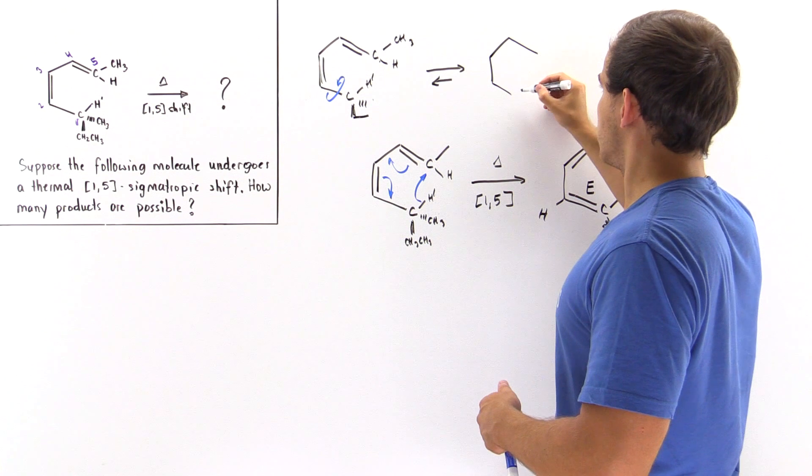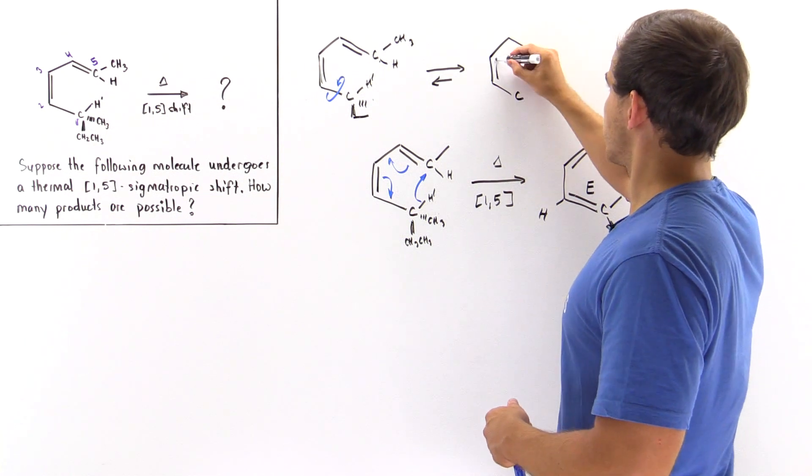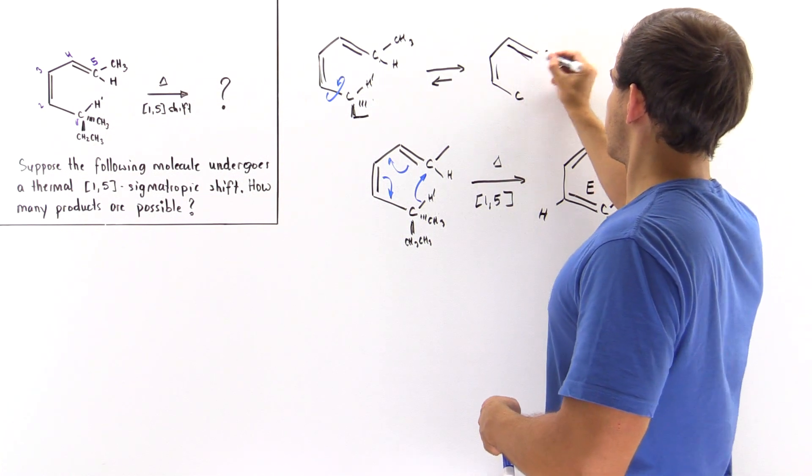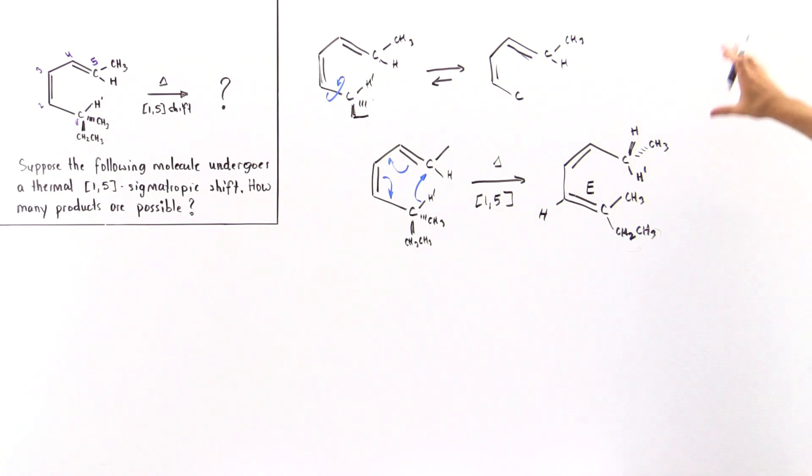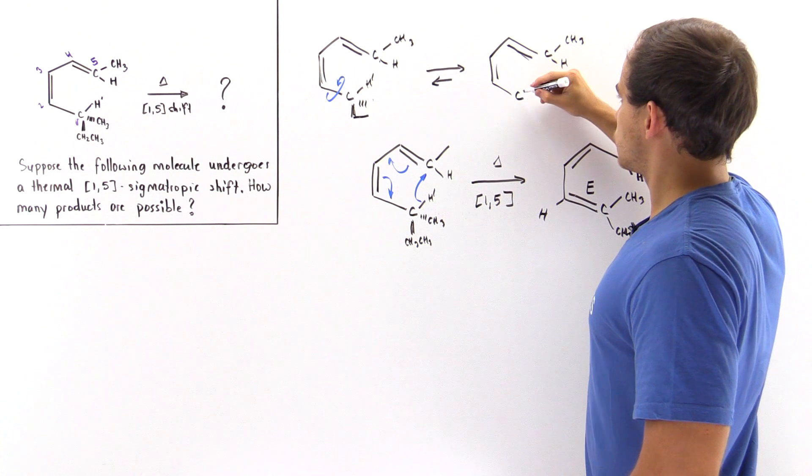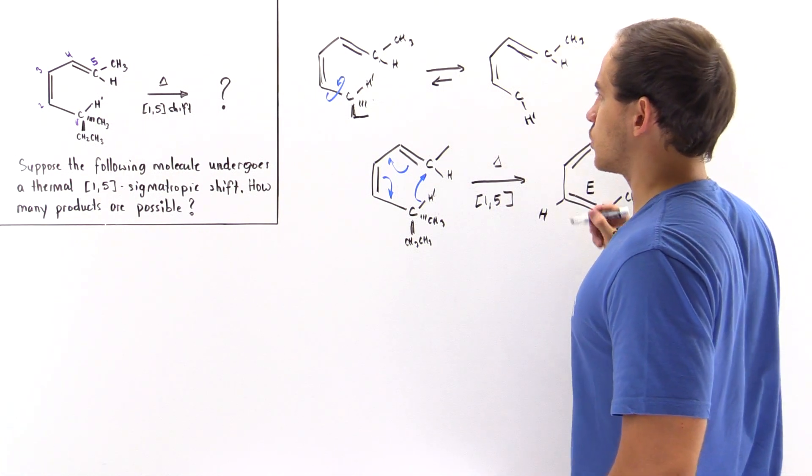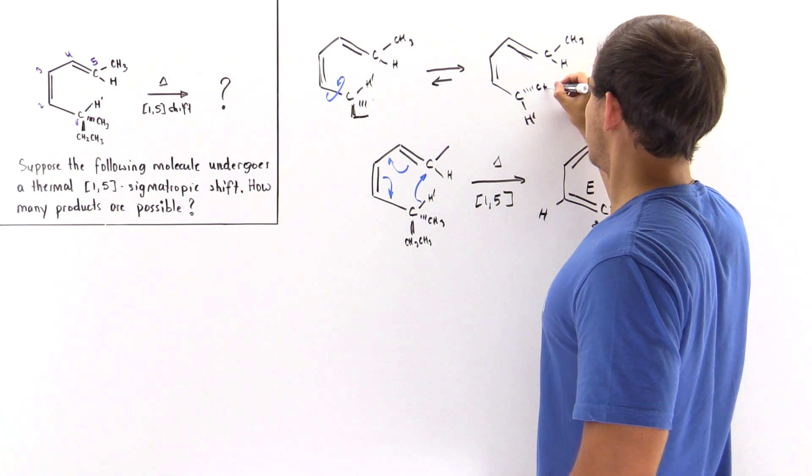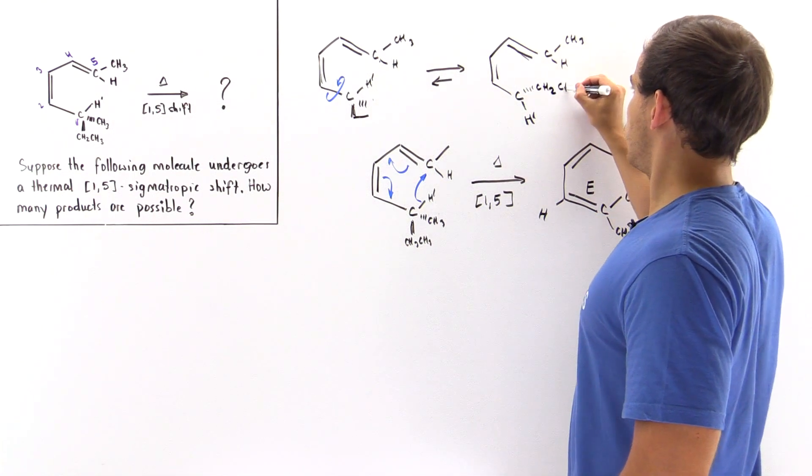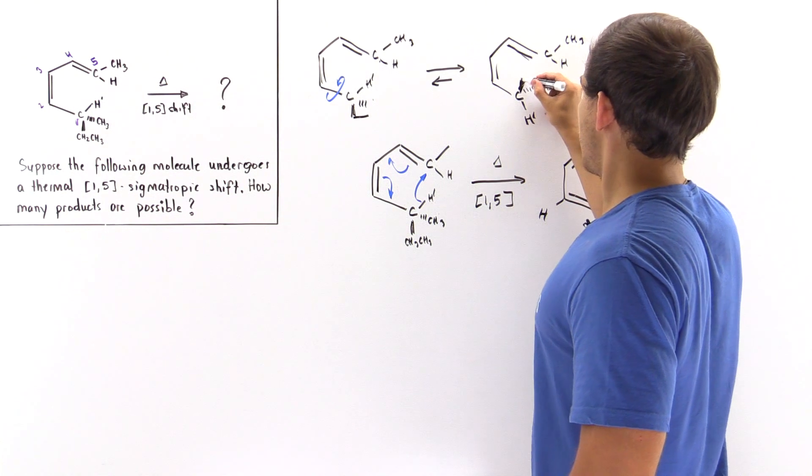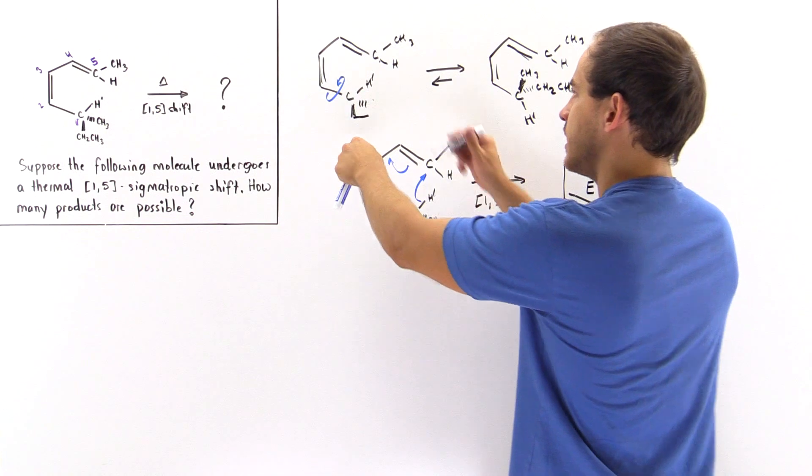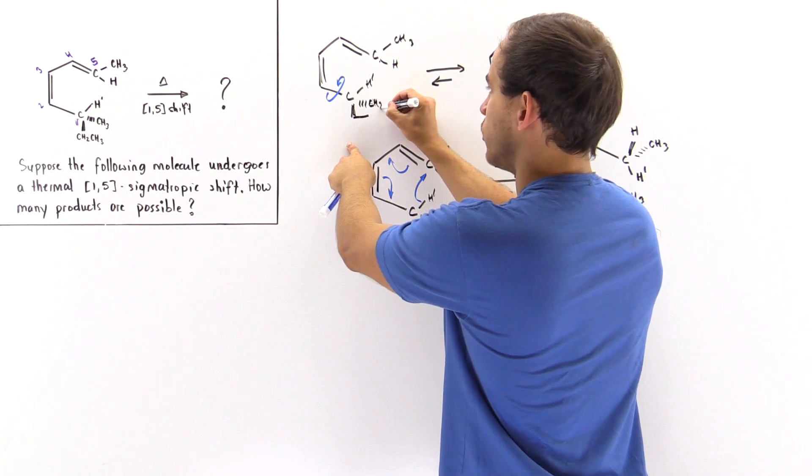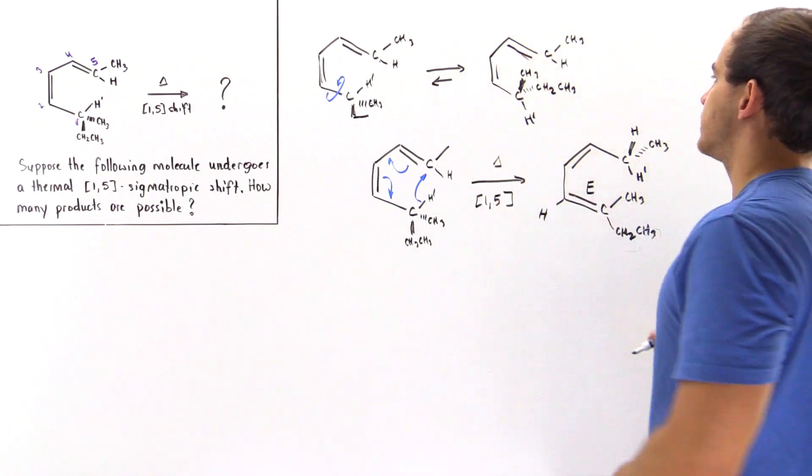So everything remains the same except now we have a slight rotation and this rotation will make sure that the product will be a different product. So if this rotates so that our H' now points downward, then that means the ethyl group will point into the board and the other group will point out of the board. So if we rotate this, this CH3 group will now point out of the board and this ethyl group will point into the board.